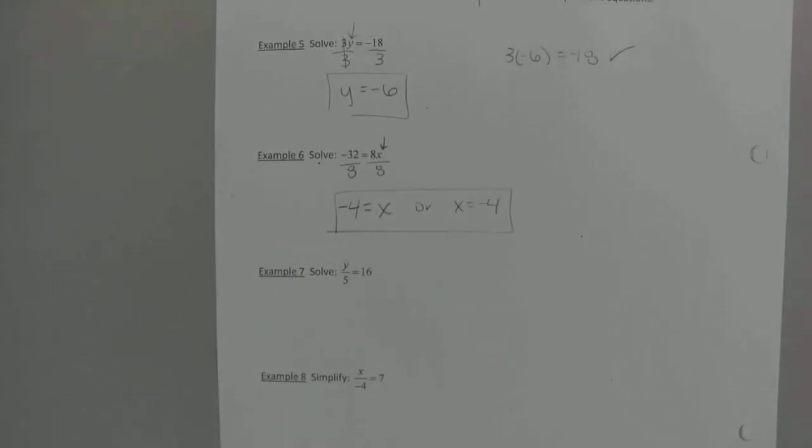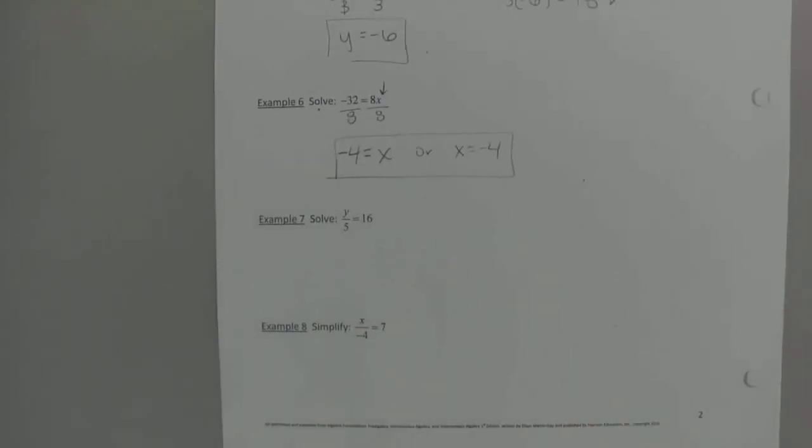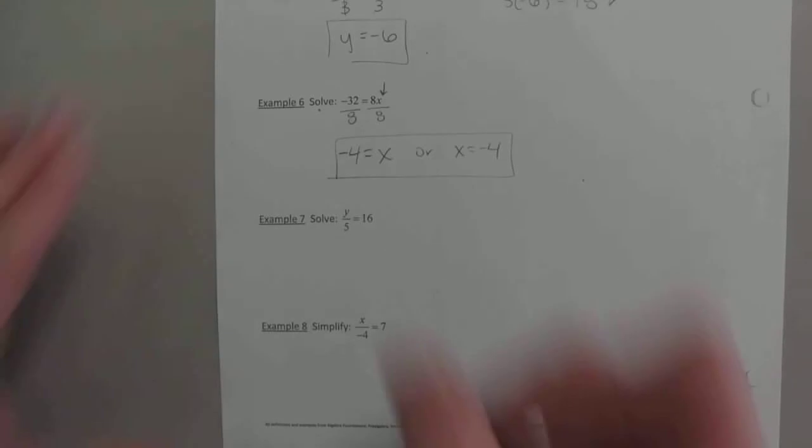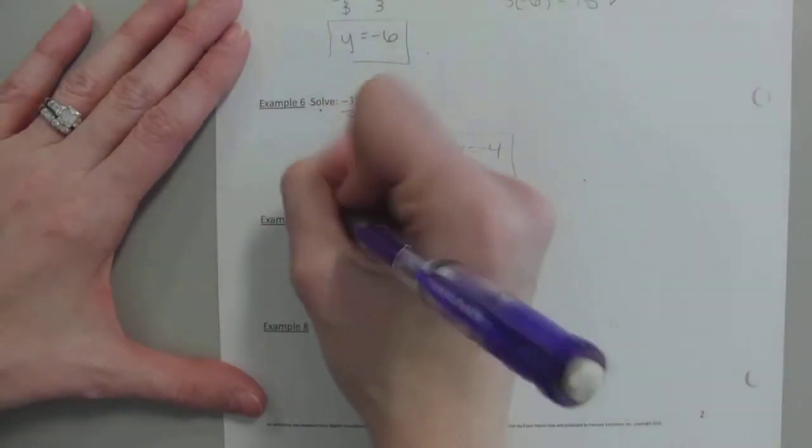And again, a lot of times we don't think of it that way, but we're solving for the unknown. Like, what do you multiply 8 by to get to negative 32? Negative 4. And then 7 and 8, I feel like the division stuff doesn't show up as often as that multiplication, but it's the same concept. How did you get rid of multiplication? You did its opposite dividing. Well, how do you get rid of division? You do its opposite. You multiply.